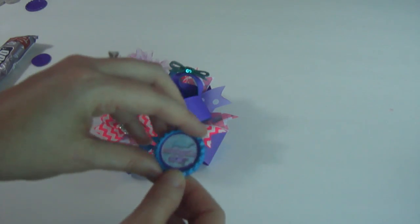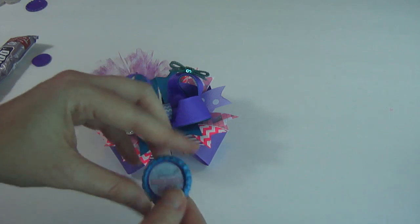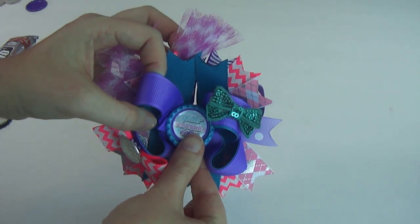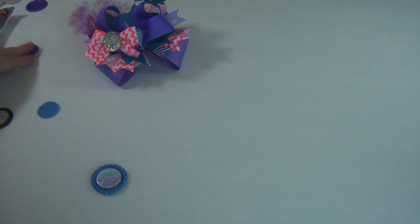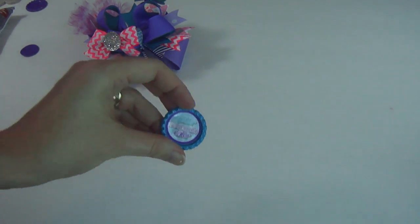Now, all you got to do, add glue to the back and press down in the middle. That's one way. Now, I'm going to show you another way if you're really worried about your bottle caps coming off of your bows.